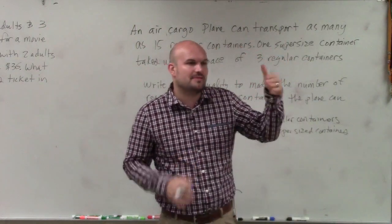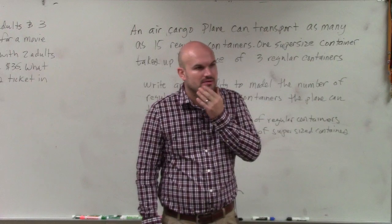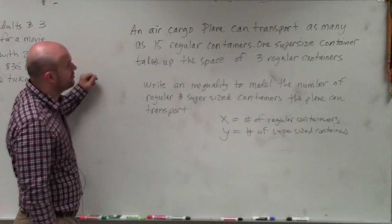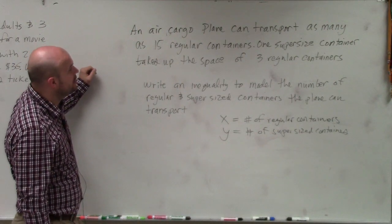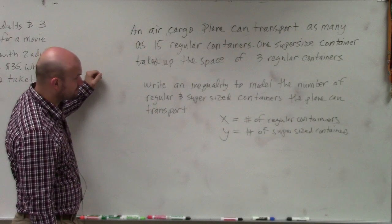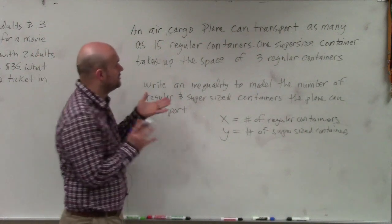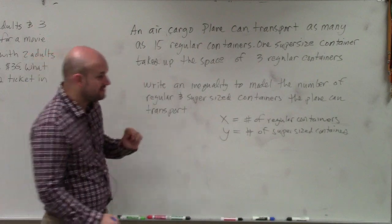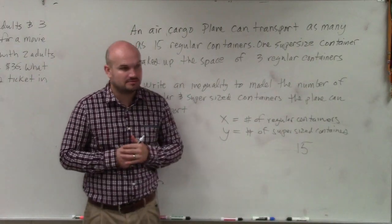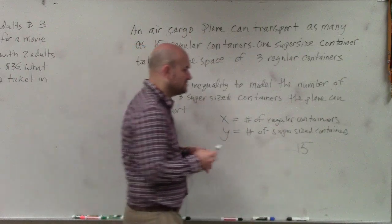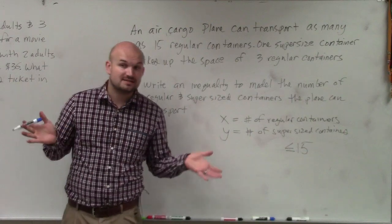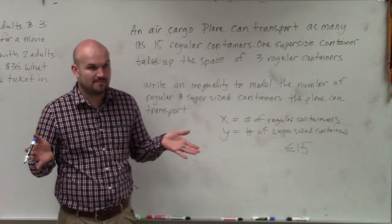How do you represent three times the size? It would be three times x, right? So an air cargo plane can transport as many as 15 regular containers, and one supersized takes up the space of three regular containers. Can we fit more than 15 containers? No. Can we fit 15? Yes. So it's going to be less than or equal to — not just less than, because it can be 15 containers.